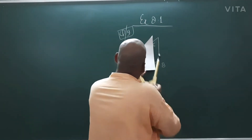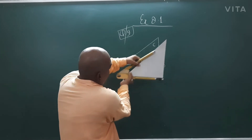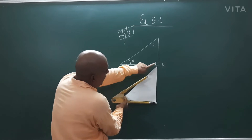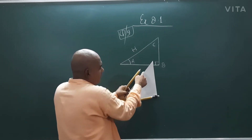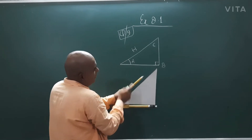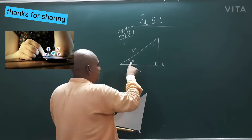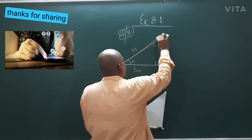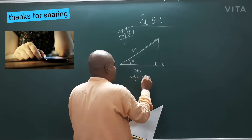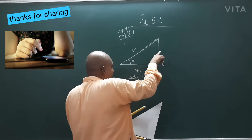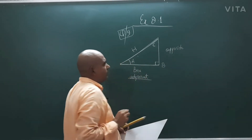Suppose we take this triangle. If we are talking about this angle A, the 90 degree is here, so hypotenuse is fixed — this is hypotenuse H. Angle A is made up of this line and the hypotenuse, so this will be the base. The remaining side is the opposite side, or you may say adjacent. Adjacent means joined. This is opposite for A, and this is base for A.